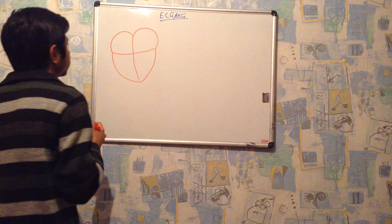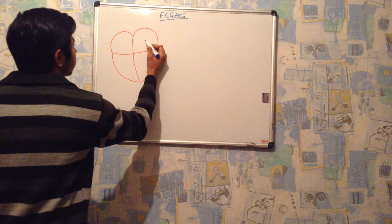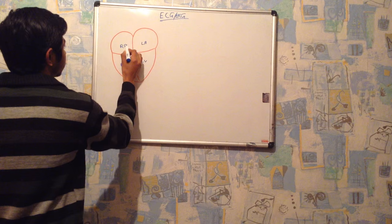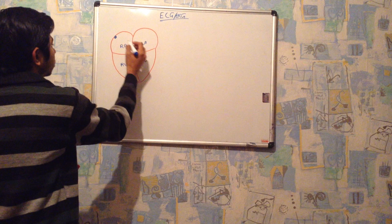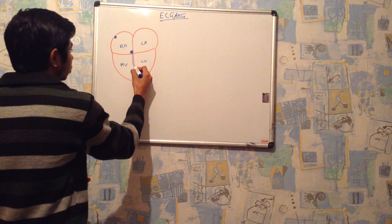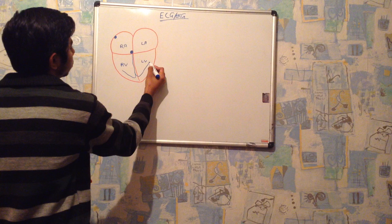So this is our heart. As you know, this is the left atrium, this is the left ventricle, this is the right ventricle, and this is the right atrium. Here we have the SA node, and here we have our AV node, which is continuing into the bundle of His, which is continuing into the right and left bundle fibers, which is continuing into the Purkinje system.